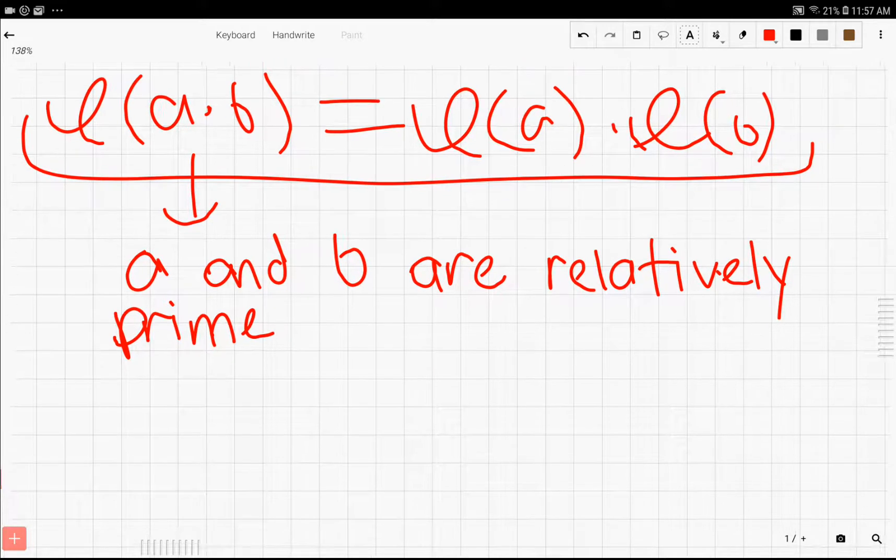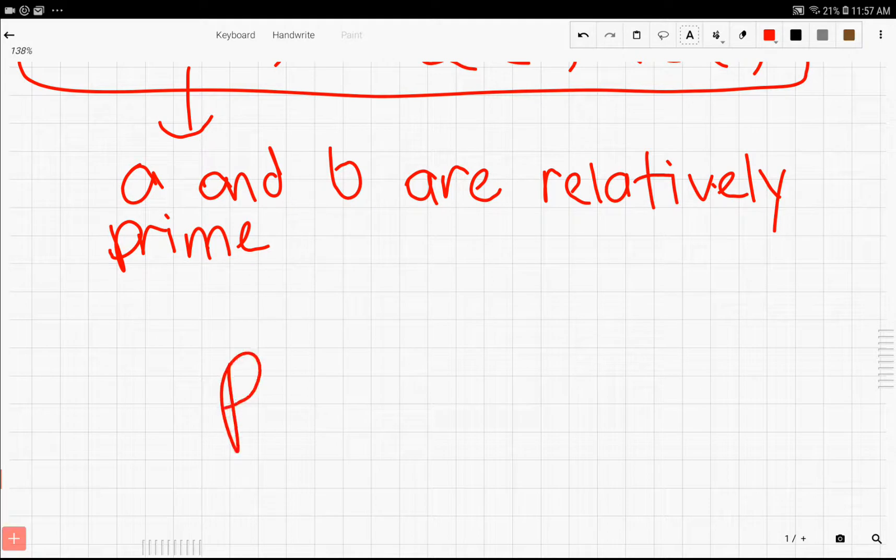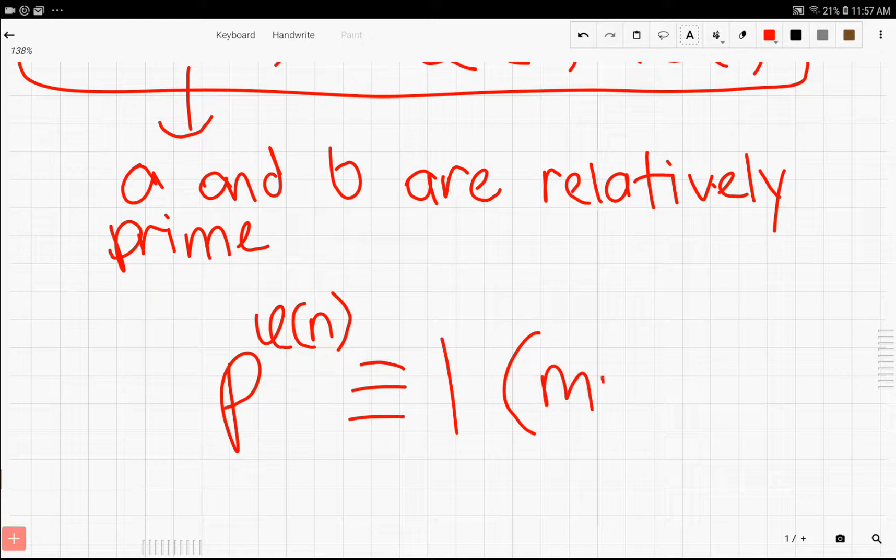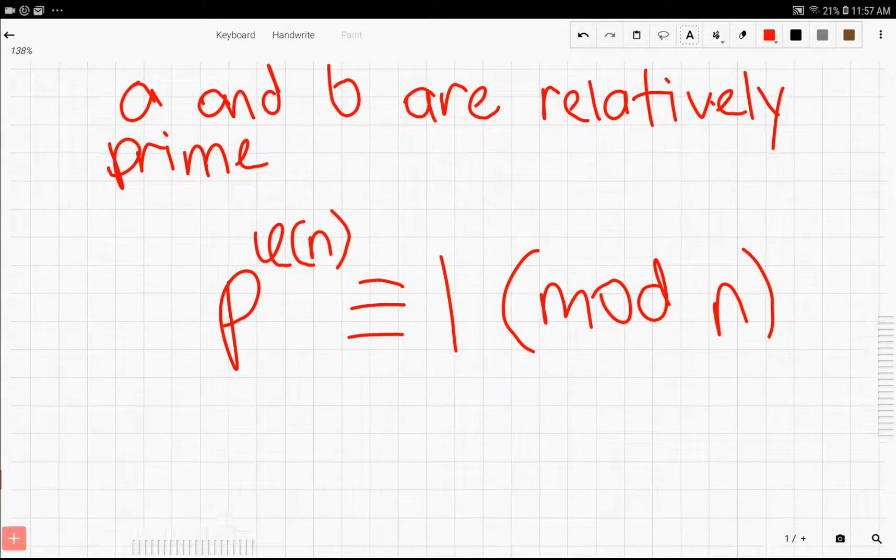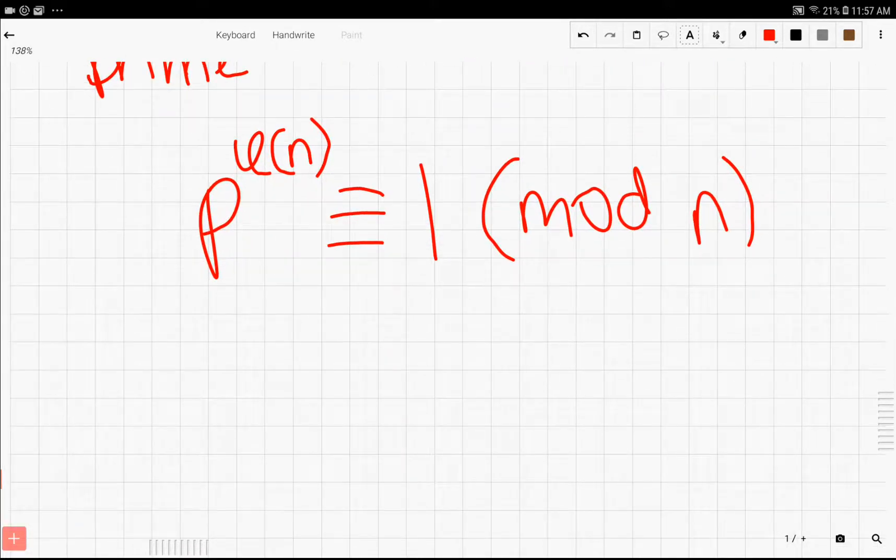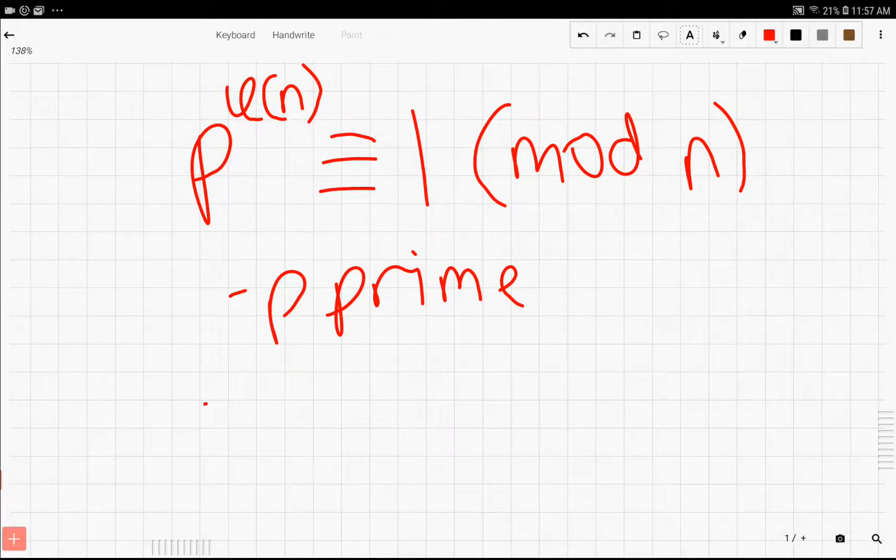Assuming that a and b are relatively prime. Once we have this, we can go on to Euler's Totient Theorem. What it states is that if we have a prime p and we put it to the φ(n) power, then this is equivalent to 1 mod n. We also have to assume certain things - there are conditions for these variables too. Of course, p must be prime.